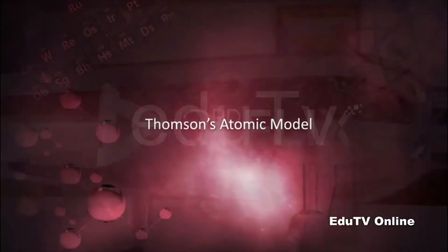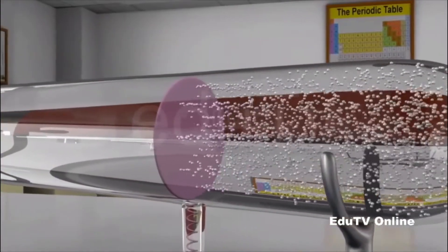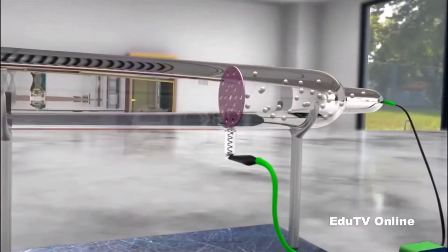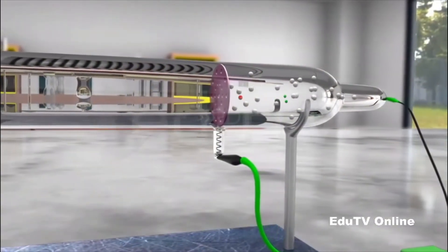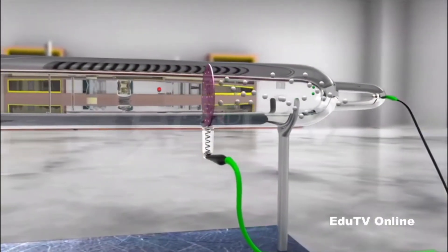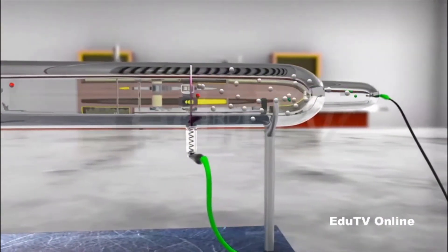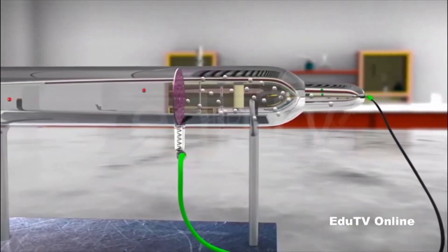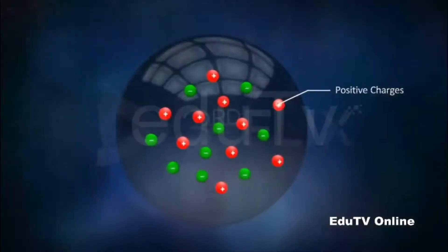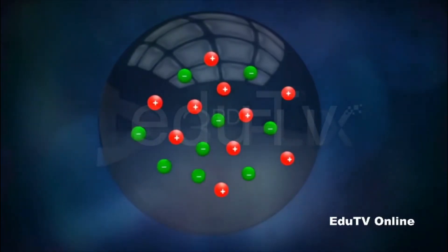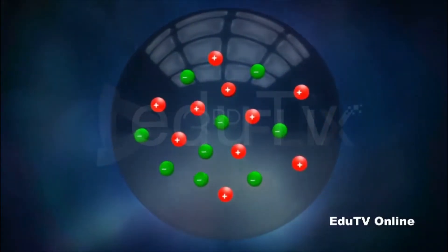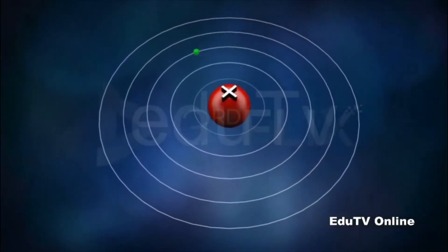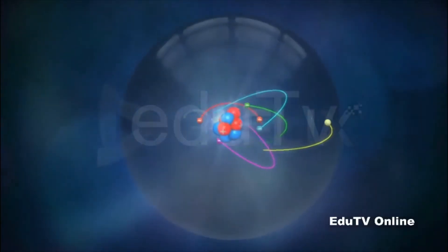Thomson's Atomic Model. Observations made from experiments suggested that Dalton's indivisible atom is composed of subatomic particles carrying positive and negative charges. Different atomic models were proposed by scientists to explain the distribution of these charged particles in an atom.